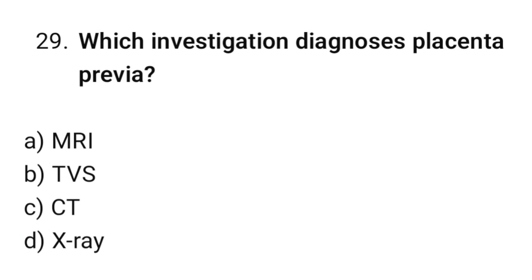Question number 29: Which investigation diagnoses placenta previa? The correct option is B: TVS (transvaginal sonography).